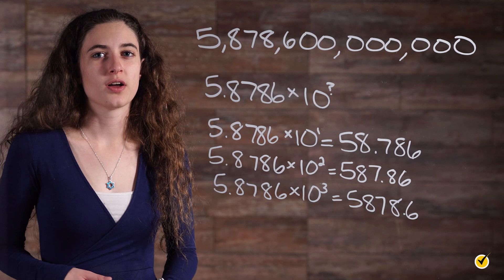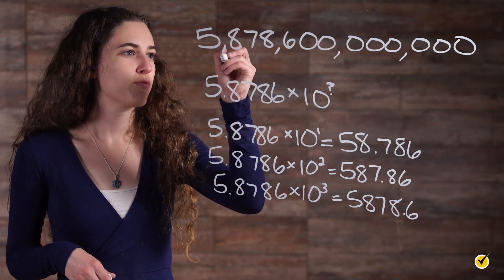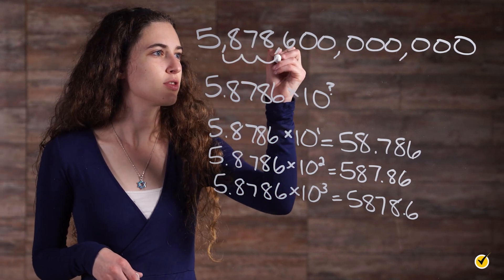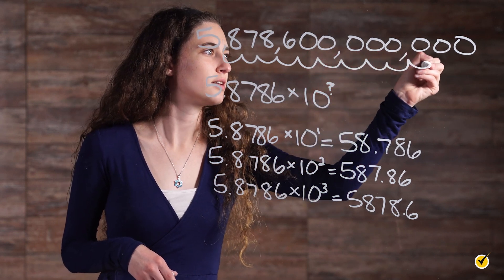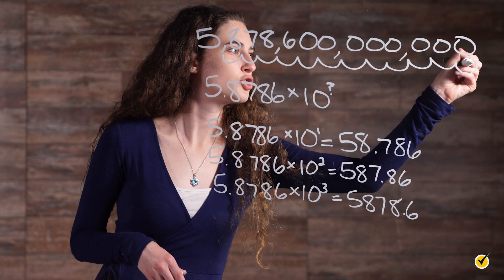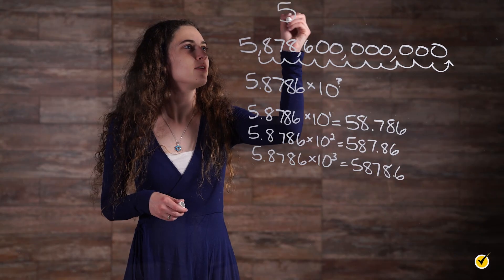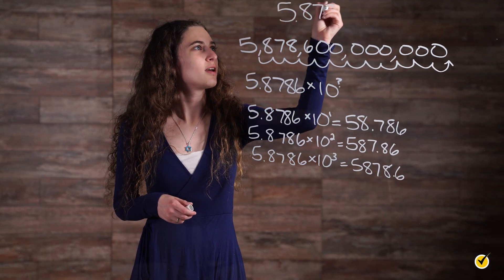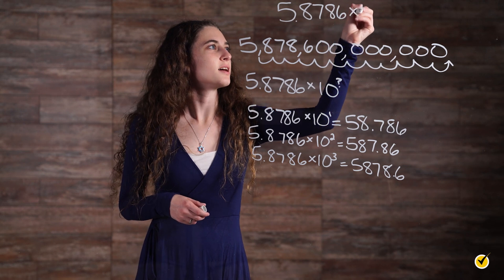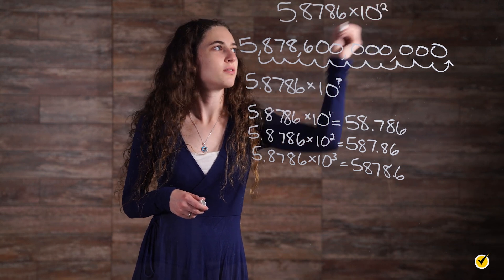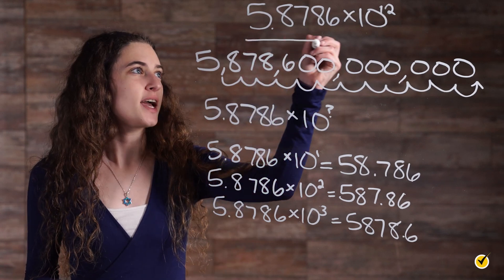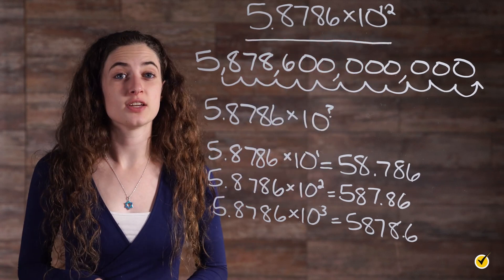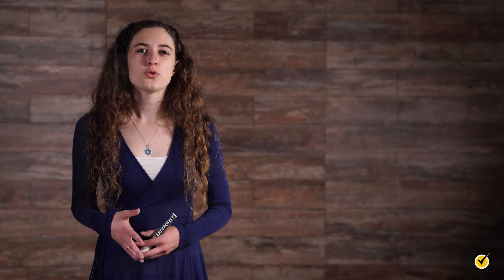And so on and so on until we reach 1, 2, 3, 4, 5, 6, 7, 8, 9, 10, 11, 12. 5.8786 times 10 to the 12th. So in scientific notation, a light year can be expressed as 5.8786 times 10 to the 12th miles. But what if you wanted to take a number written using scientific notation and change it into standard form?